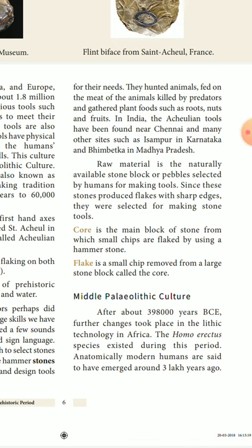They hunted animals, fed on meat, scavenged animals killed by predators, and gathered plant foods such as roots, nuts, and fruits. In India, the Acheulean tools have been found near Chennai and in many other sites such as Issampur in Karnataka and Bhimbetka in Madhya Pradesh.